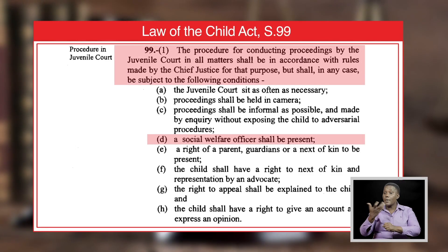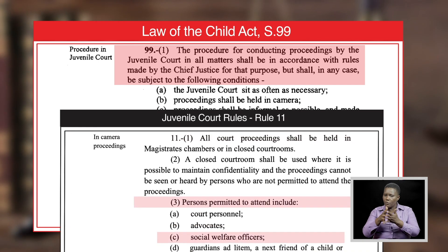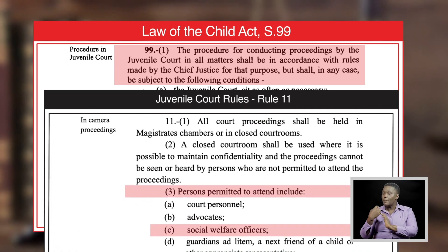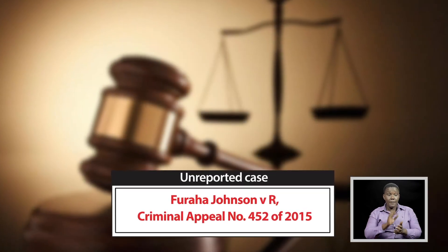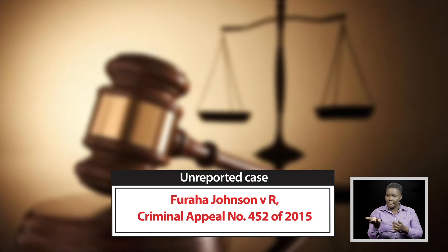A social welfare officer shall be present, as stipulated under Rule 11, Subrule 3C of the juvenile court rules. The unreported case of Furaha Johnson v. Republic, Criminal Appeal No. 452 of 2015, illustrates this. In that case, a district court in Arusha held a juvenile court case without a social welfare officer present. The Republic won the case, but when it went to the Court of Appeal, the appeal was allowed simply because the social welfare officer was not present and did not take part in the proceedings.